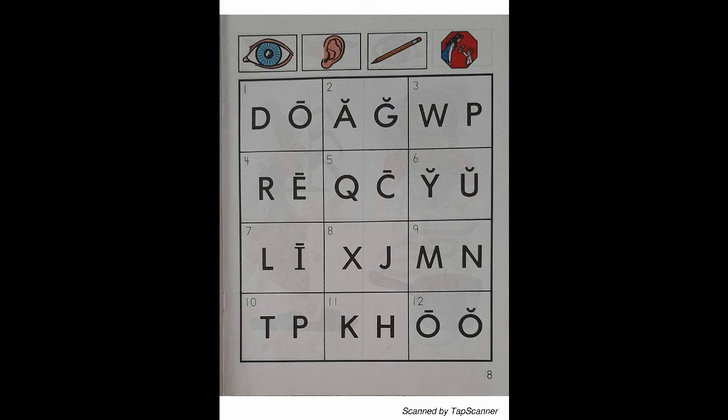Look at the letter in box 11. Listen as I say the sound of the letter. H — Hippopotamus — H. With your pencil, circle the letter that reads H.